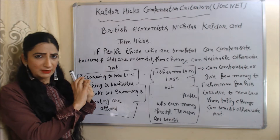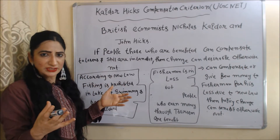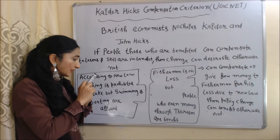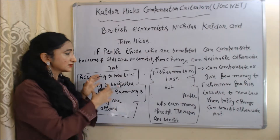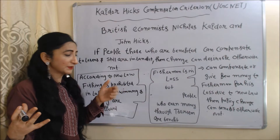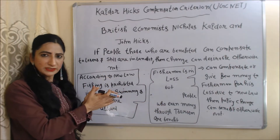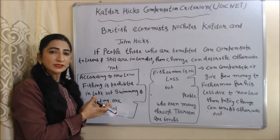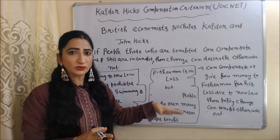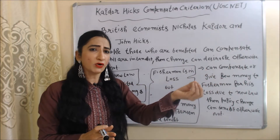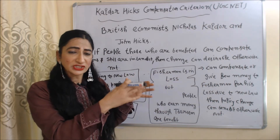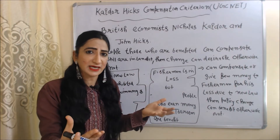We will clearly understand this with the help of one example. Suppose a government law has changed and according to the new law, fishing is prohibited in lakes, but swimming and boating are allowed. In such a case, fishermen are at a loss because fishing is prohibited. But people who earn money through tourism are in benefit because swimming and boating are still allowed. In such a case, people who earn money through tourism can compensate the fishermen — give some money for his loss due to the new law. In such a case, the change can be desirable, otherwise not.